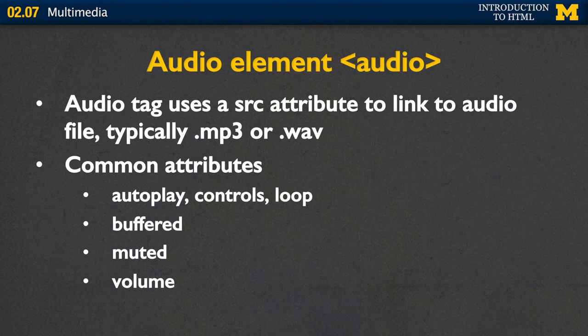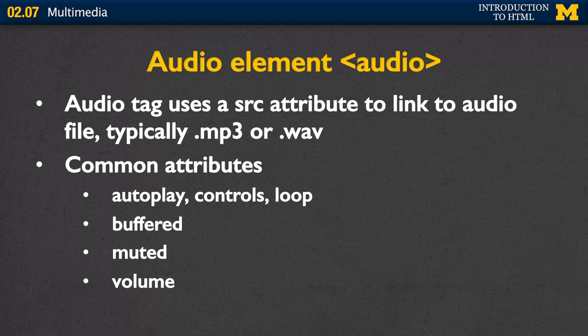The audio element is very similar to the video, and again we use a source attribute to link to the file. Typically you're going to use an MP3 or WAV file. The attributes are again very similar — you have autoplay, controls, and loop. But we also have buffered, muted, and volume. These are extra attributes you can put in where you're going to control what the person's listening to and how loud.